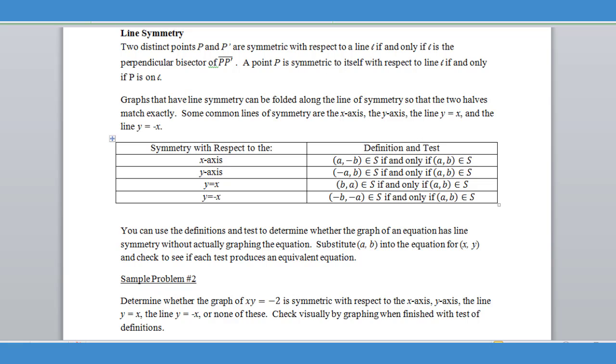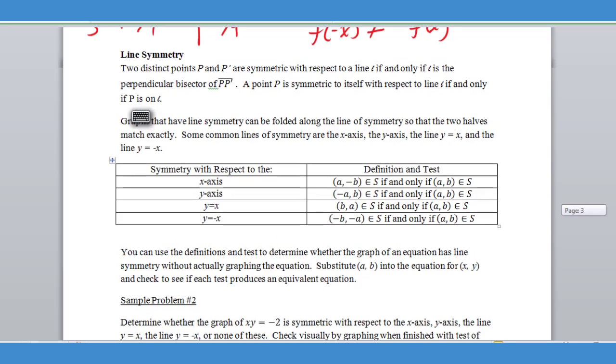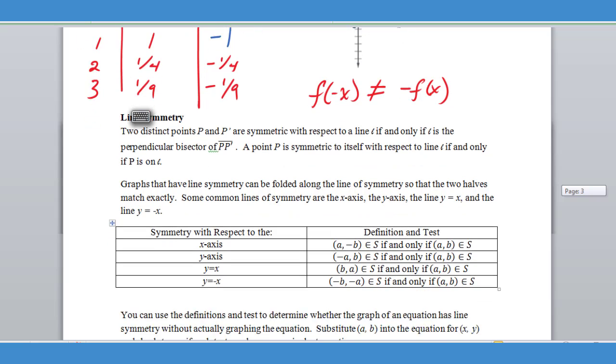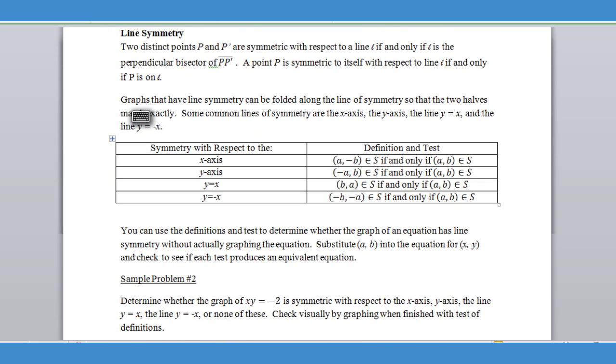If you went up to the previous problem like we saw before, you could see that if we fold that graph down the Y axis, we would have line symmetry across the Y axis. So that's a good visual example of line symmetry.